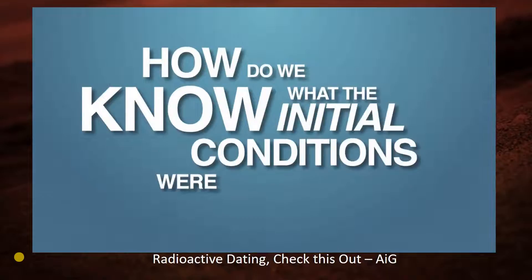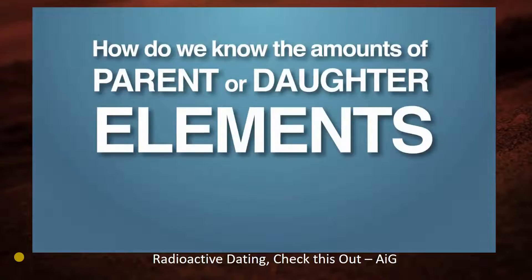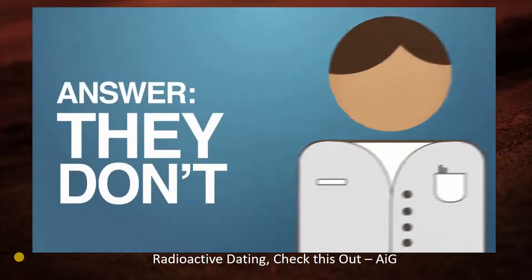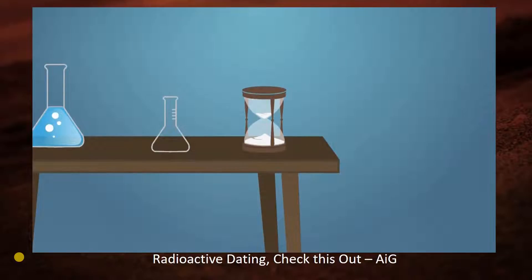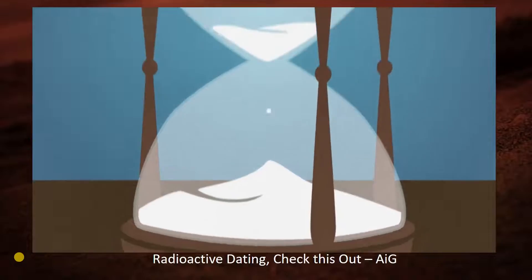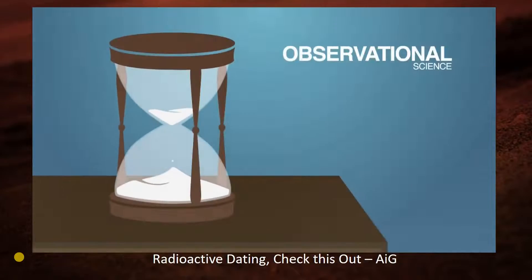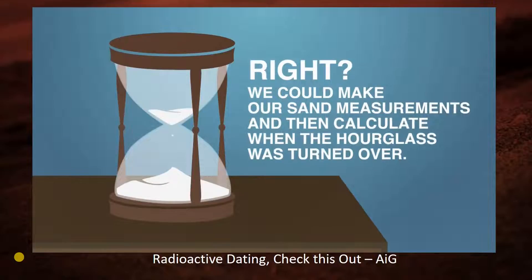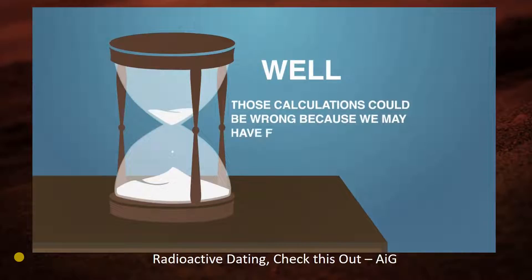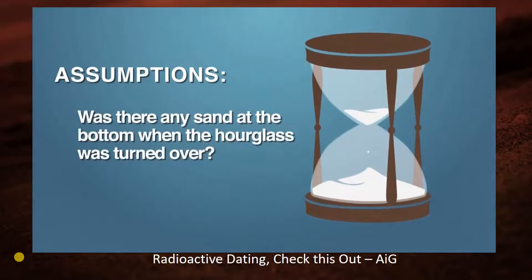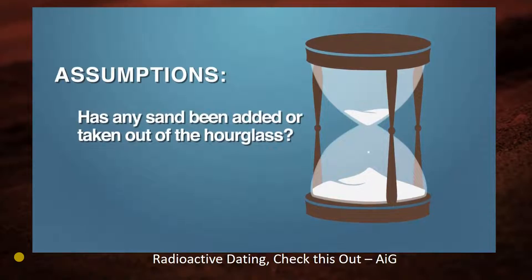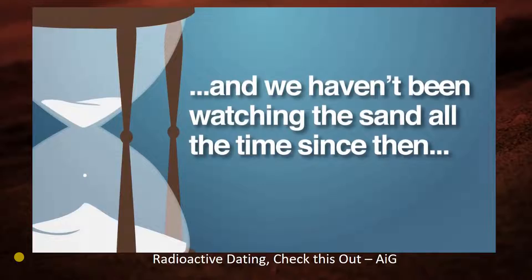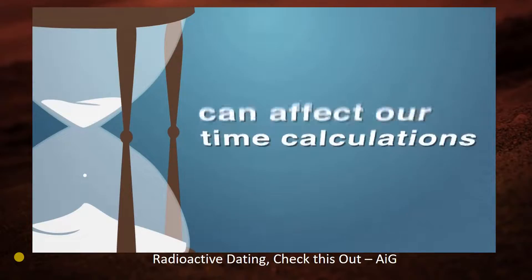How do we know the initial conditions of the rock sample? How do we know the amounts of parent or daughter elements haven't been altered by other processes in the past? How does someone know the decay rate has remained constant since the rock formed? The answer is: they don't. Think of an hourglass — you see sand at the top and bottom, some sand sprinkling through. Observational science allows us to measure the sand and calculate how long the hourglass has been running. But those calculations could be wrong, because we may have failed to consider major assumptions: Was there any sand at the bottom when the hourglass was turned over? Has any sand been added or taken out? Has the sand always been falling at a constant rate? All three assumptions can affect our time calculations.